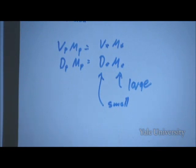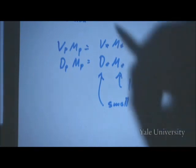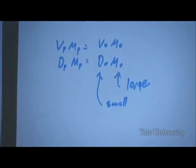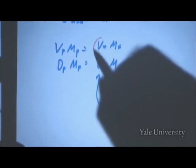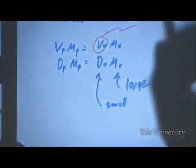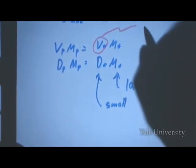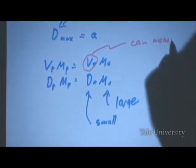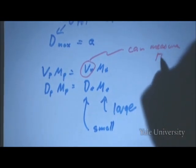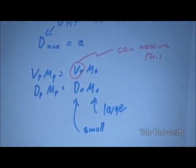Small, but as it turns out, measurable. In particular, the velocity of the star turns out to be the thing that you can measure. And so that's how you determine that there's an exoplanet there.